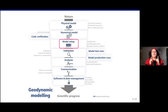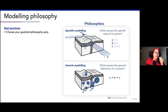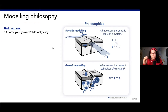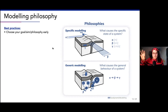We have our physics, we have our model, our model works to the best of our knowledge. Now we need to make a model setup - tailor the actual model to our specific research question. There are a few things to take into account. First, you have a philosophy that you should ideally choose as soon as possible, maybe together with your research question. You can have specific modeling, where you see a specific observation or are interested in a specific region and want to know what caused the state of that region.